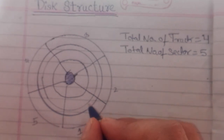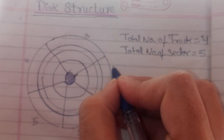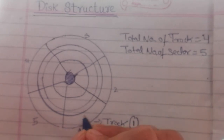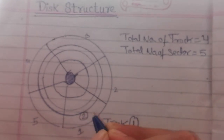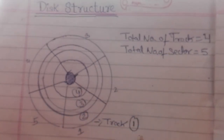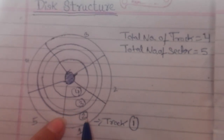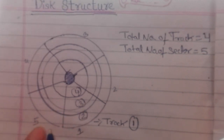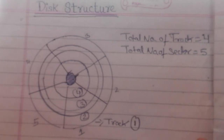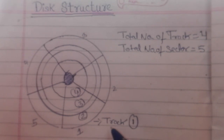So we have four tracks: first track, second track, third track, and fourth track. Track number one has five sectors, track number two has again five sectors, track number three has five sectors. So each track has a constant number of sectors. This is the way the disk is divided into tracks and sectors.